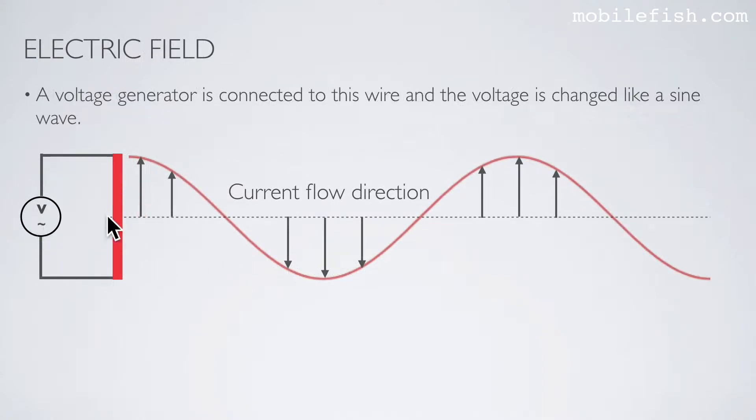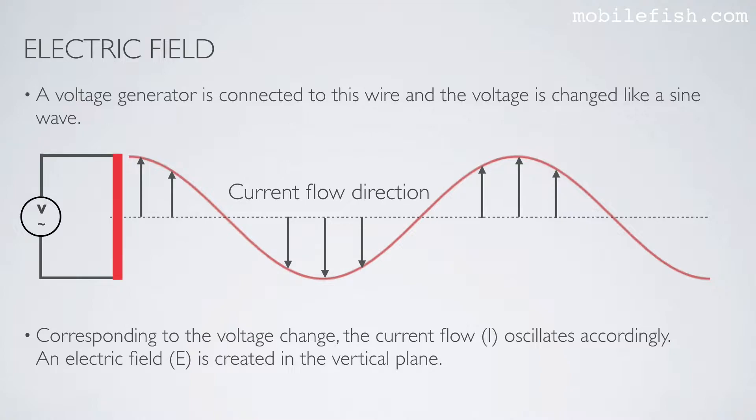A voltage generator is connected to this wire, and the voltage is changed like a sine wave. Corresponding to the voltage change, the current flow oscillates accordingly.